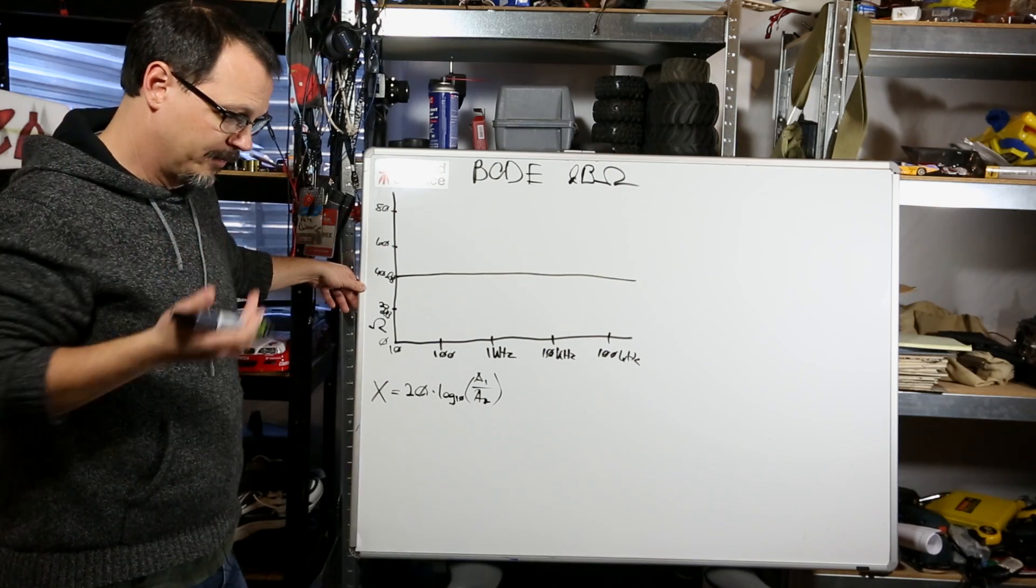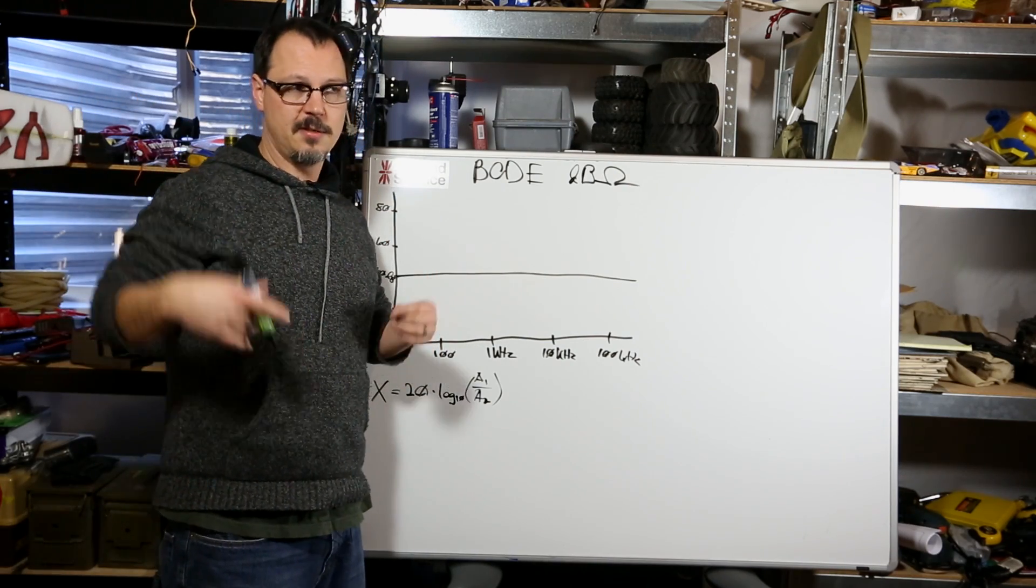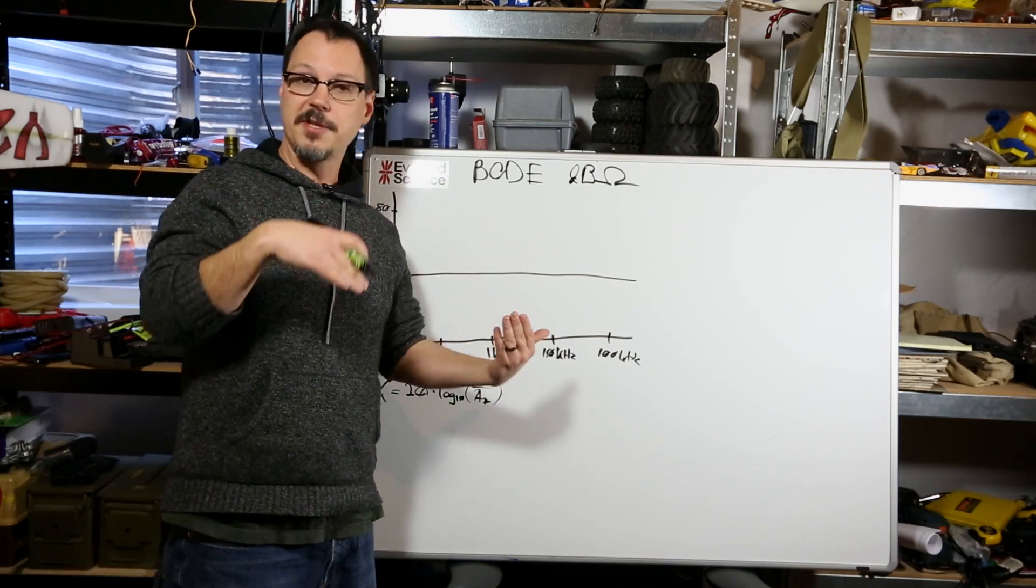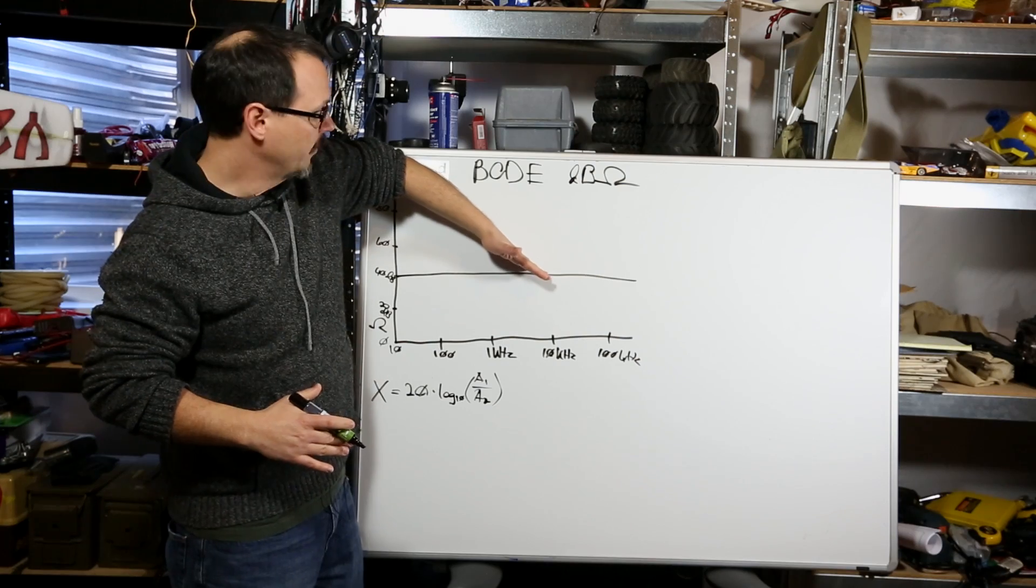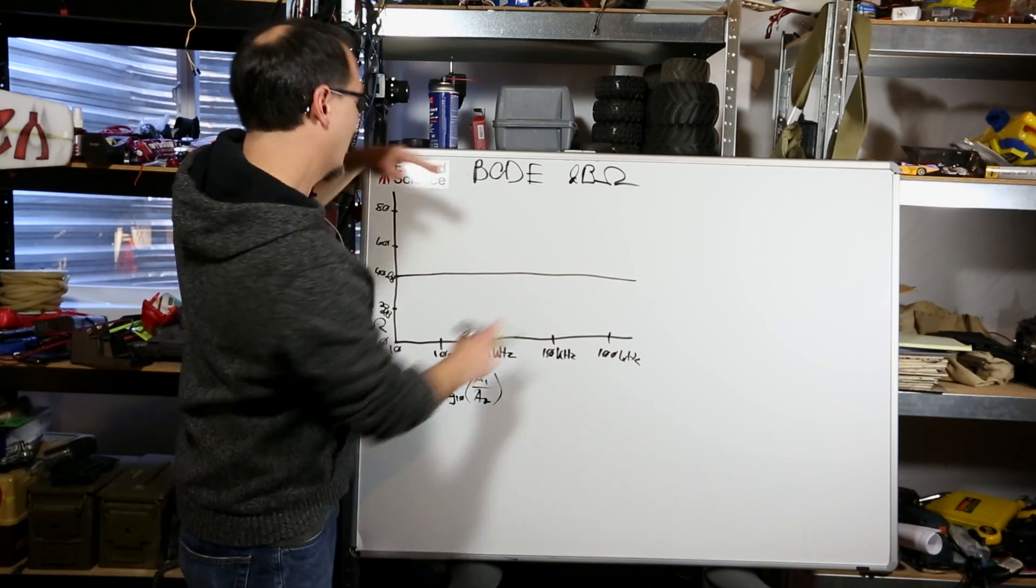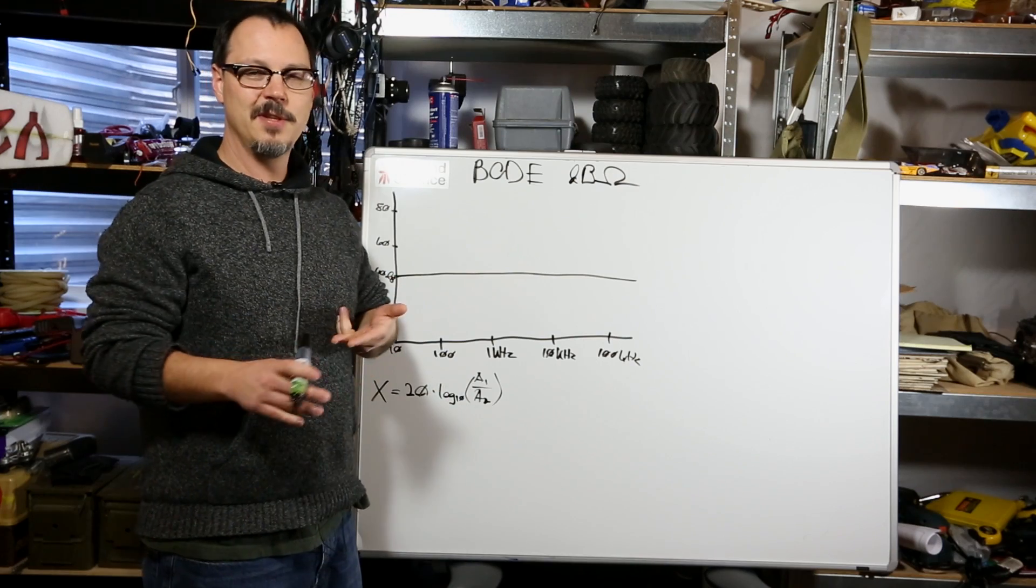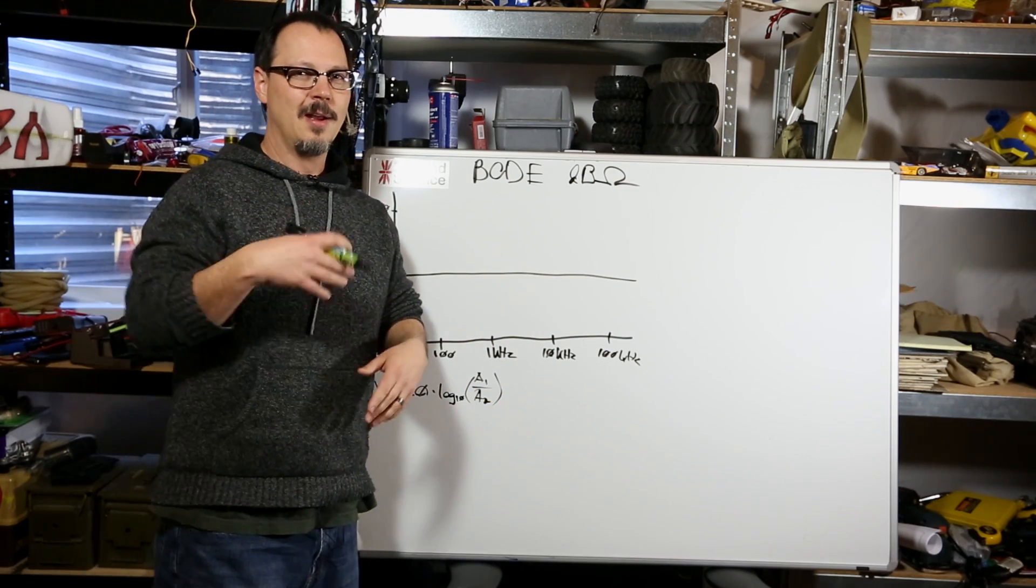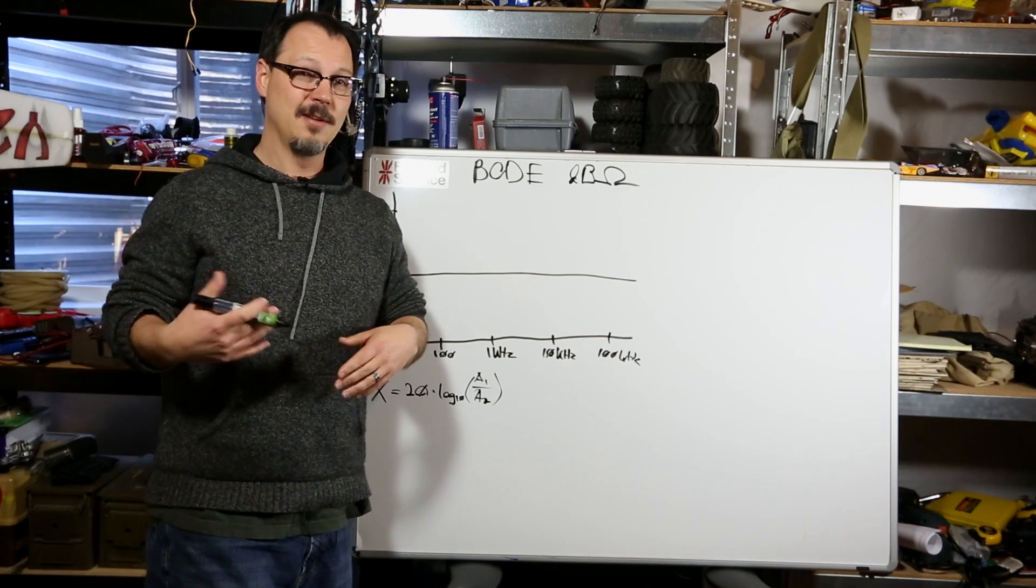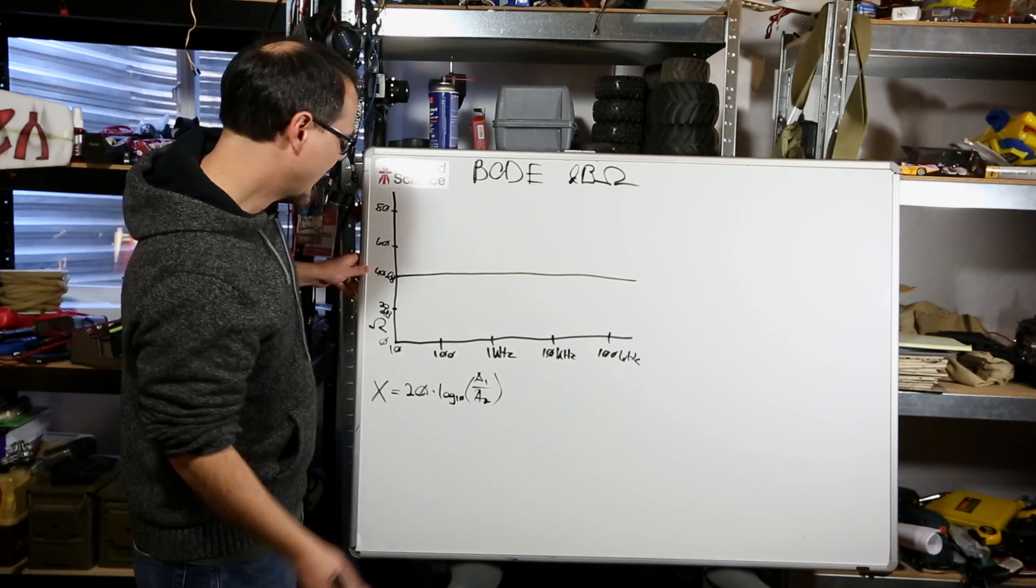A capacitor is different. It decreases its resistance as frequency increases. Inductors are just the opposite. So a capacitor is going to trend down over time or over frequency. An inductor will trend up. But I'm going to stick with just R's and C's for this, because typically, unless you're doing like a speaker crossover, I don't see too many inductors in filter circuits. Most of them are active designs now.